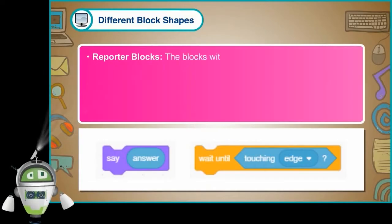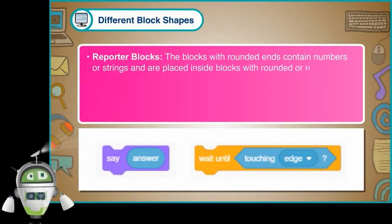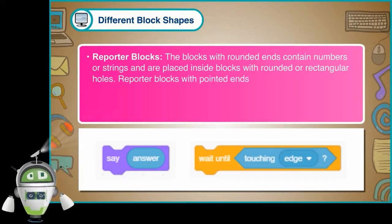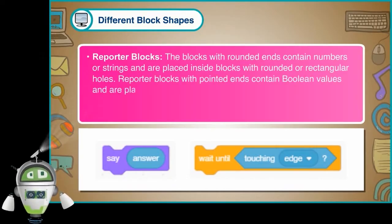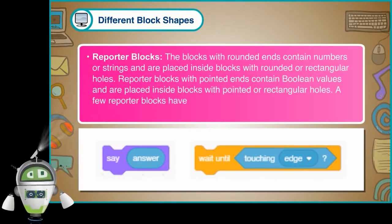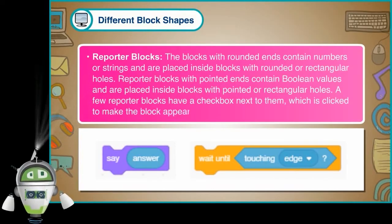Reporter Blocks: The blocks with rounded ends contain numbers or strings and are placed inside blocks with rounded or rectangular holes. Reporter Blocks with pointed ends contain Boolean values and are placed inside blocks with pointed or rectangular holes. A few Reporter Blocks have a checkbox next to them, which is clicked to make the block appear on the stage.